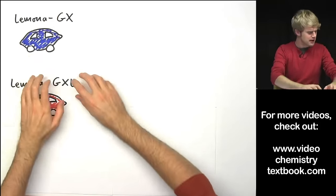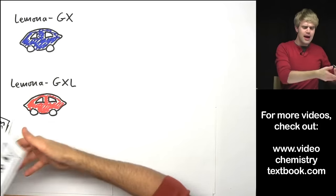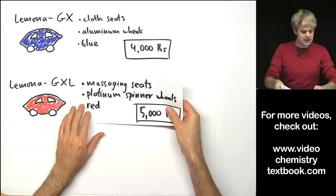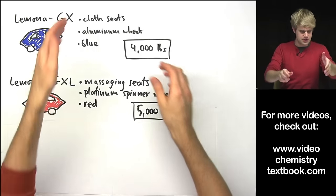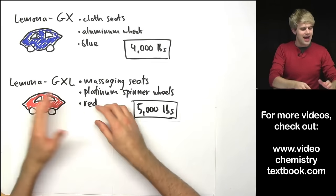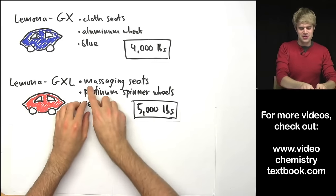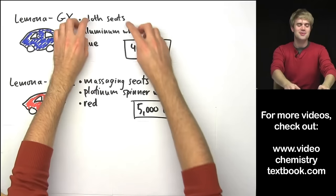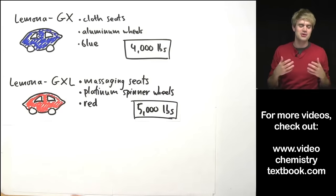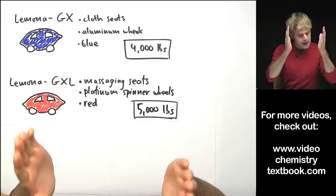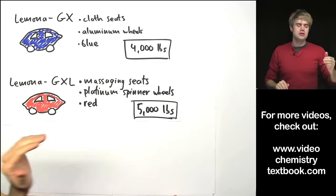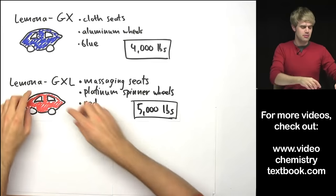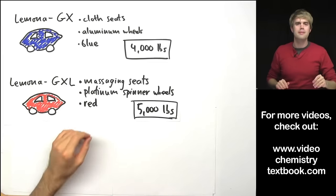The Lamona GX and the Lamona GXL. And these two models have different features that are unique to each one of them. The GX is blue. The GXL is red and this one is kind of a luxury model. It's got massaging seats and platinum spinner wheels whereas this one only has cloth seats and cheap aluminum wheels. Either way even though these are different models that have different features they are both Lamonas because they have this distinct lemon-like shape.